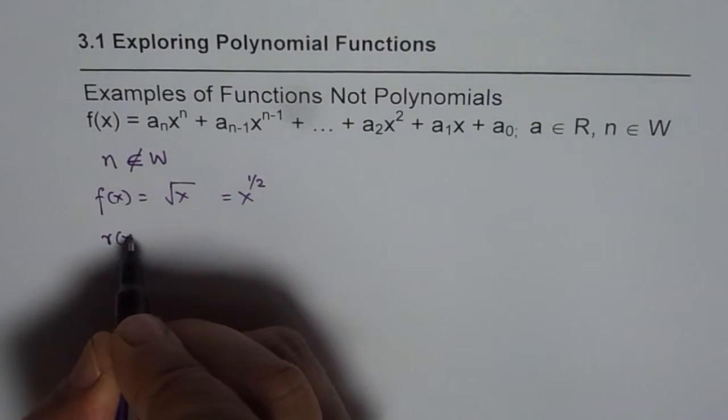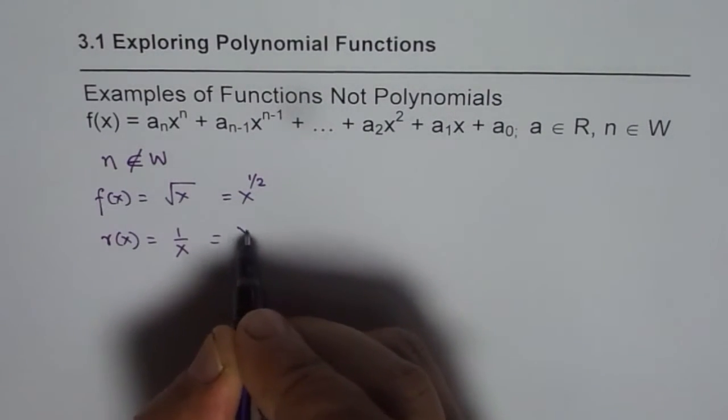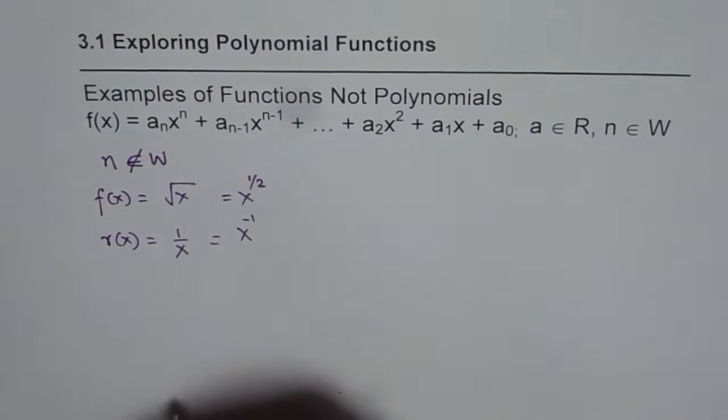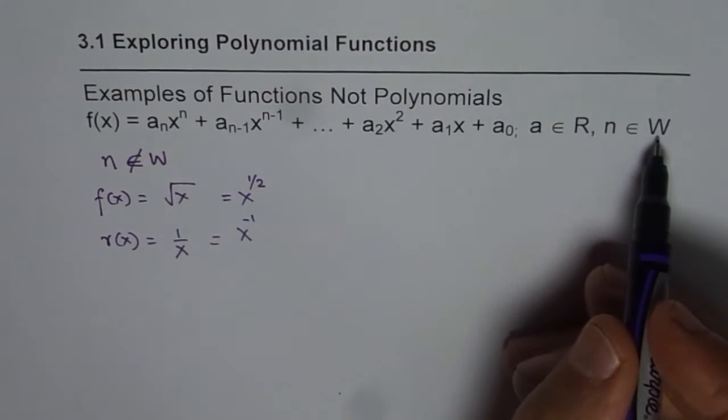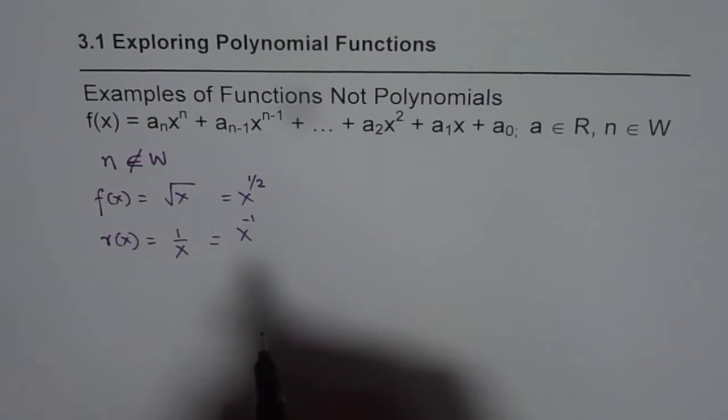How about r(x) equals to 1 over x? This means x to the power of minus 1. n should be a whole number. Minus 1 is integer, it is not a whole number. Therefore, this is also not a polynomial.